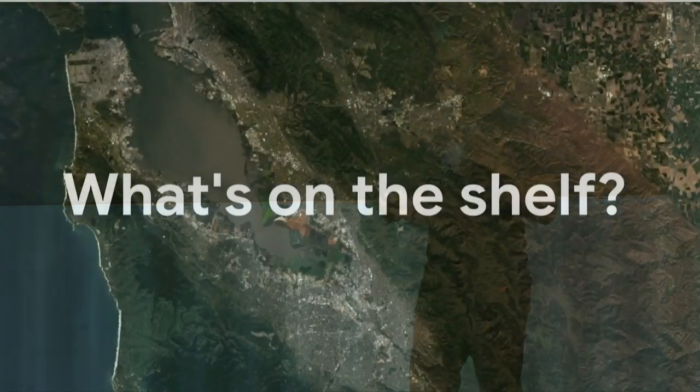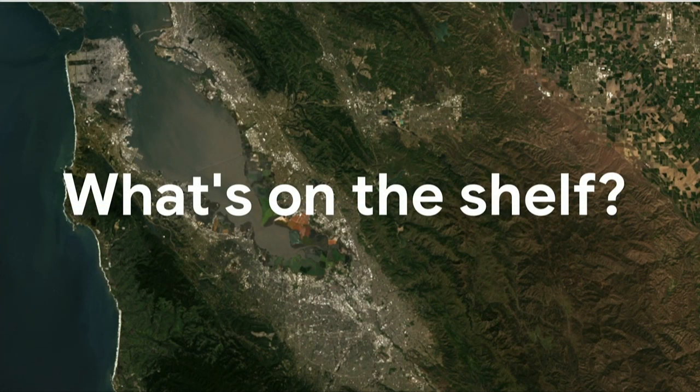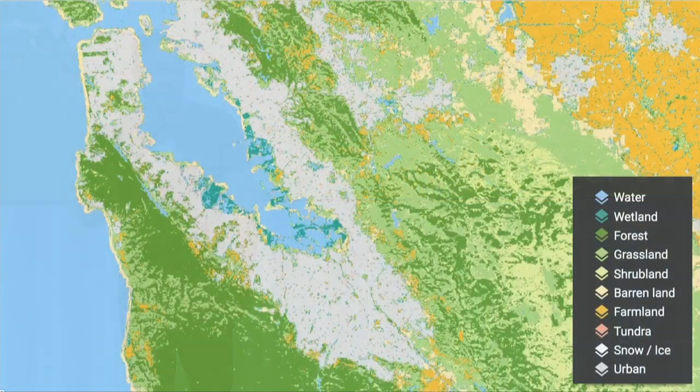You might be wondering: what is land cover? The analogy I like to use is 'what's on the shelf?' Organizations all over the world — governments, NGOs, nonprofits, researchers, businesses — want to understand the literal landscape in which they're operating. More formally, land cover is the observed physical cover of the Earth's surface, which describes the distribution of vegetation types, water bodies, human-built environments, and other land cover types. That distribution is a map.